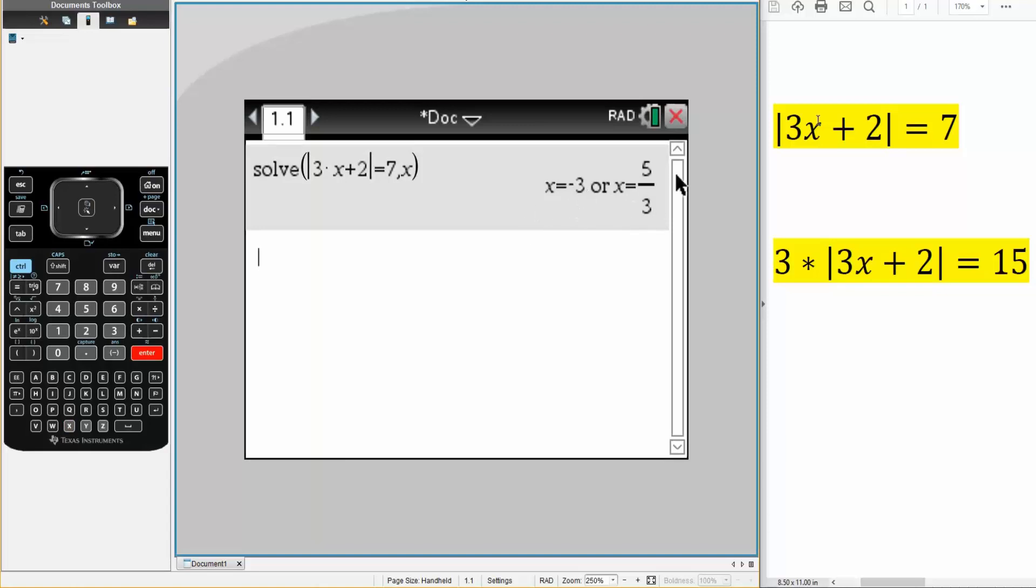So if we plug in negative 3 here, we would get 7. Likewise, if we plug in 5 over 3 here, we would also get 7.